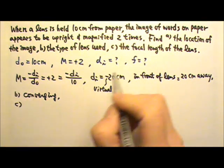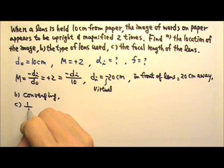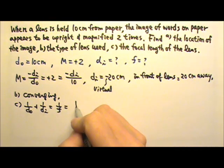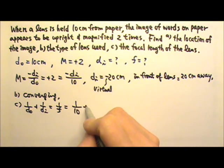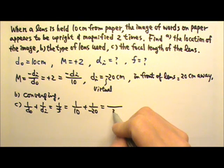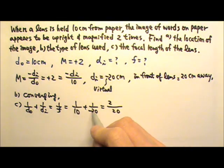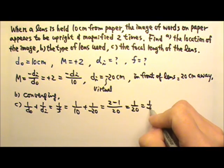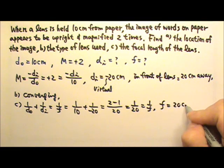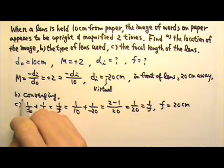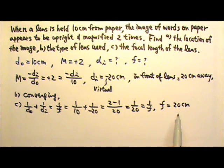Now let's find the focal length. We can use the mirror lens equation. 1 over DO plus 1 over DI equals 1 over F. DO is 10. DI is negative 20. So this gives us 1 over 20 minus 1 over 20, which gives us 1 over 20 equals 1 over F. So F is 20 cm. The focal length being positive matches with the converging lens. Because a converging lens has positive focal length.